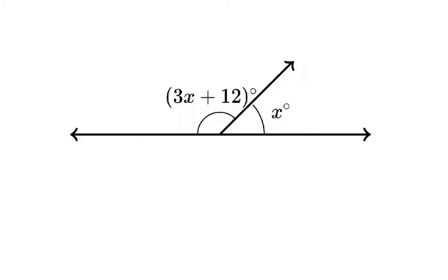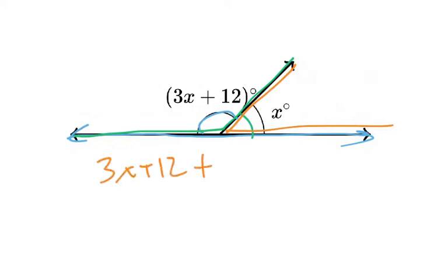And one last one here. We have a straight angle here, that's 180 degrees. We have two angles that add up to 180 degrees, so we have this green angle here and we have this orange angle here. And so both angles would give us 3x plus 12 plus x equals 180 degrees.